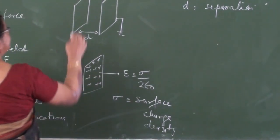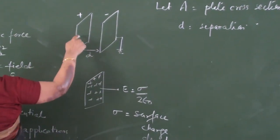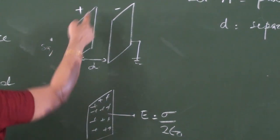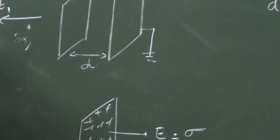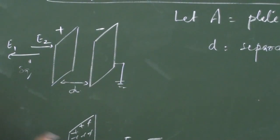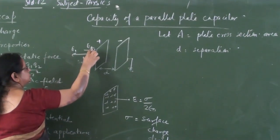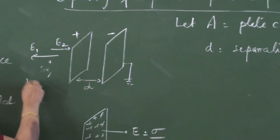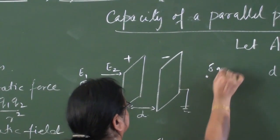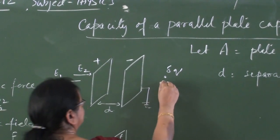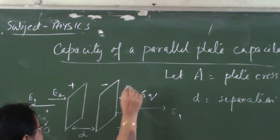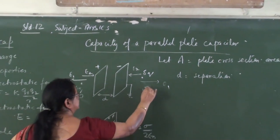Here we have two infinite charged sheets. If we find the resultant field on the left side of the positively charged plate, the positive sheet repels the test charge giving a field pointing left, and the negative sheet attracts the test charge also pointing left — but since the magnitudes of E₁ and E₂ are equal and their directions are opposite on the outside, the resulting field on the left side is zero. Similarly, the resultant field on the right side is also zero.